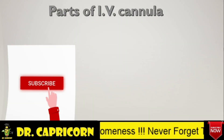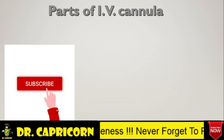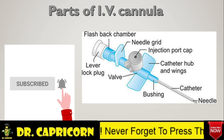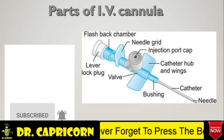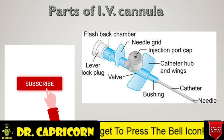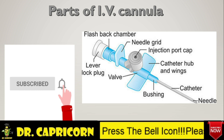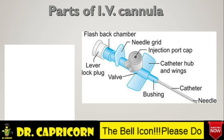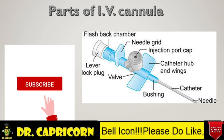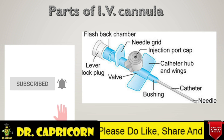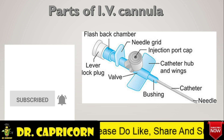Let's get started. Parts of intravenous cannulae. It consists of needle, catheter, flushing, catheter hub and its wings, valves, injection port cap — after removing which, intravenous drip set and drugs can be given as bolus or infusion — needle guard, flashback chamber and lever lock plug.